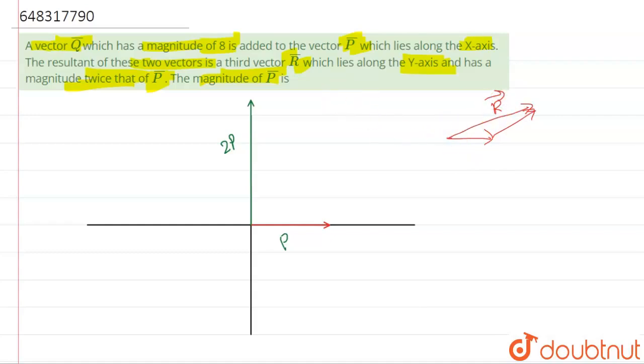Over here, from this head, the Q vector's tail will start and it will join up till this head. That means this is the Q vector. And the magnitude is given as 8.